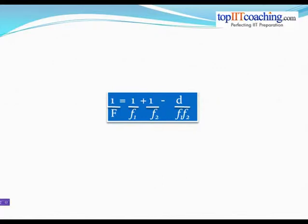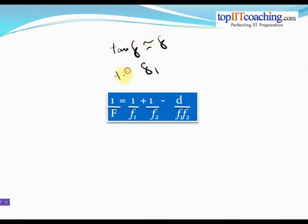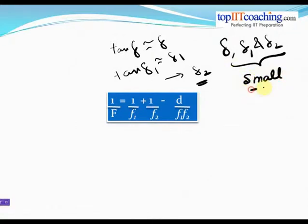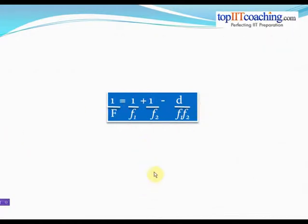One important condition for this formula to be valid is that δ, δ1, and δ2 — the net deviations suffered by the incident ray — must be very small. This is because in deriving this expression we assumed tan δ ≈ δ, tan δ1 ≈ δ1, and tan δ2 ≈ δ2. That's the only condition for this formula to be valid. Now let's move on and solve an IIT problem.